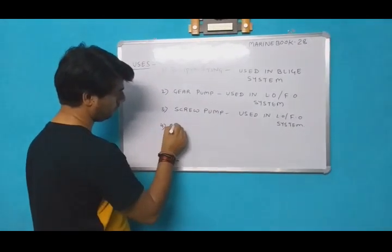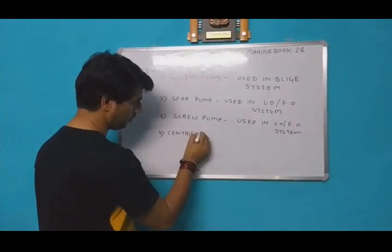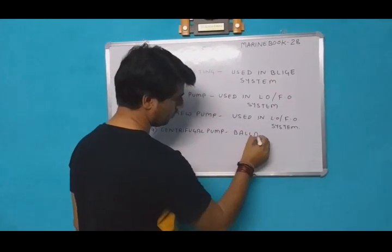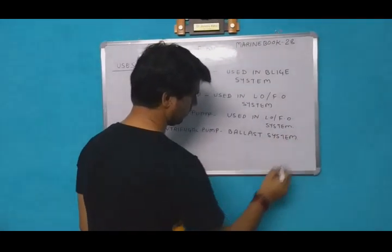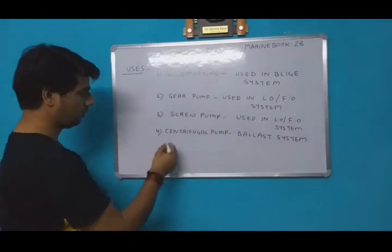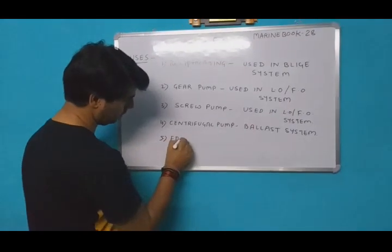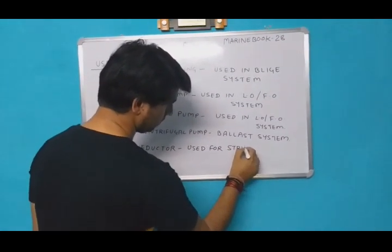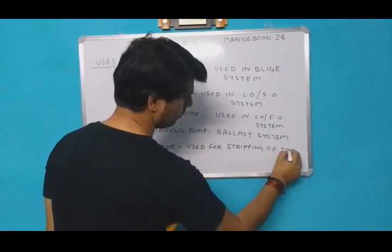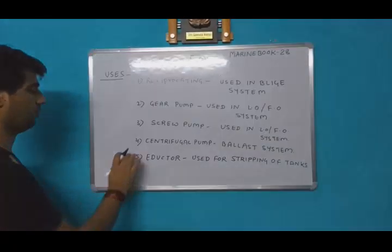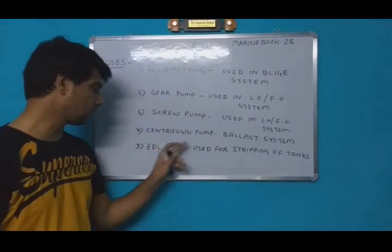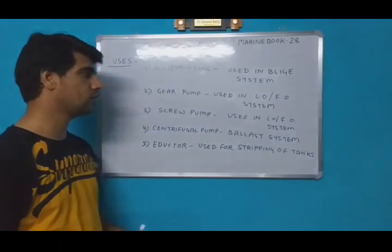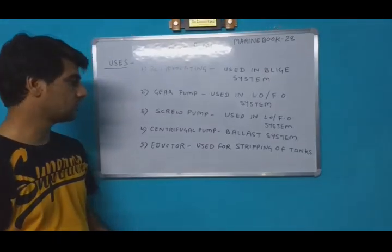Number four is the centrifugal pump, which is used in the ballast system. Another one is the eductor, which is used for stripping of the tanks. So these are the types of pumps: reciprocating pump, gear pump, screw pump, centrifugal pump, and eductor. Reciprocating pump is used in the bilge system, gear pump in the lubricating or fuel oil system, screw pump in the lubricating or fuel oil system, and centrifugal pump in the ballast system. Thank you very much.